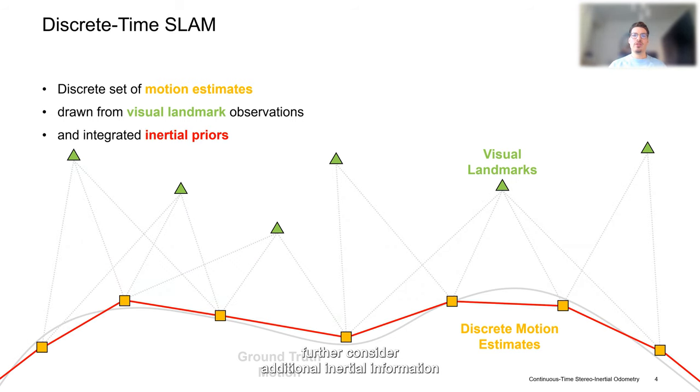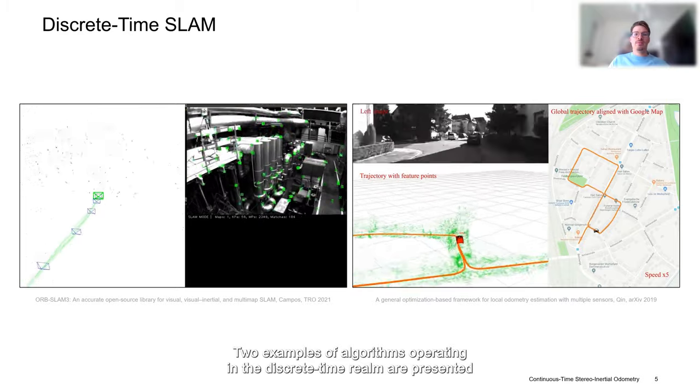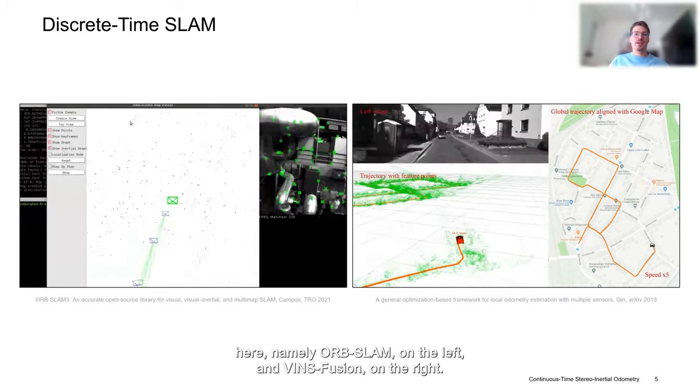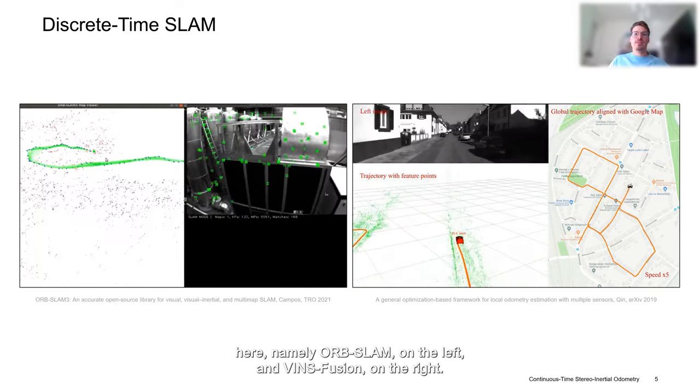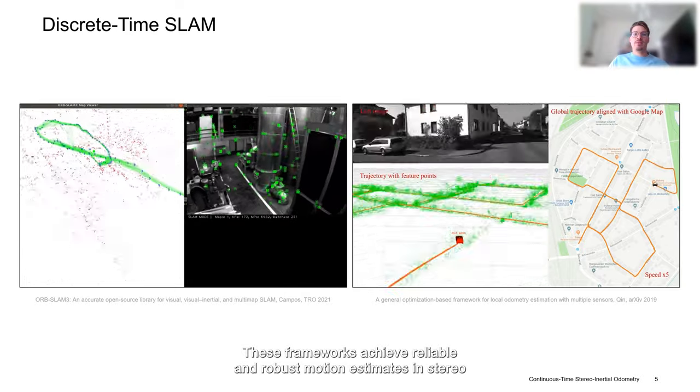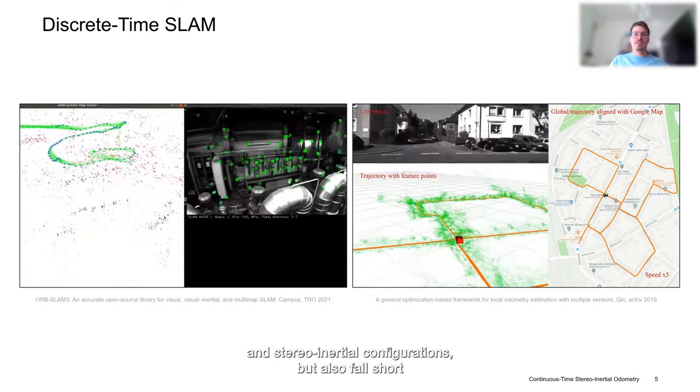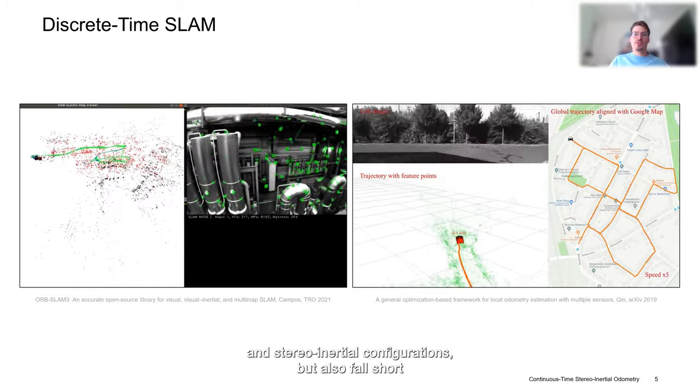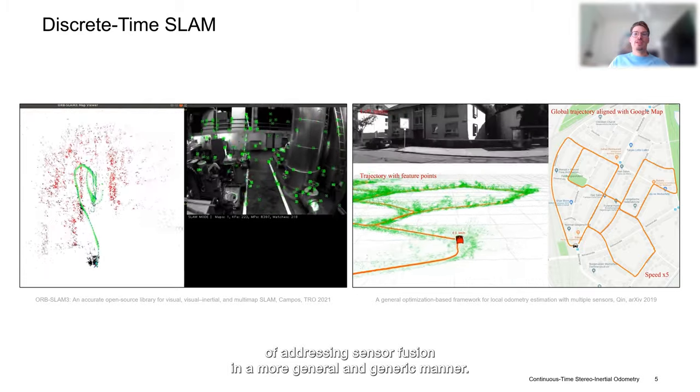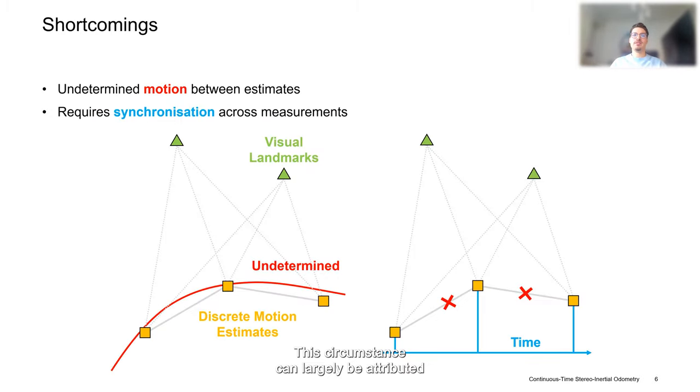Many established approaches further consider additional inertial information to better constrain the mathematical problem and boost the overall accuracy of the achieved estimates. Two examples of algorithms operating in the discrete time realm are presented here, namely ORB-SLAM on the left and VINS-Fusion on the right. These frameworks achieve reliable and robust motion estimates in stereo and stereo-inertial configurations, but also fall short of addressing sensor fusion in a more general and generic manner. This circumstance can largely be attributed to one of the inherent properties of discrete time approaches, which is that the motion between discrete state estimates is a priori undetermined.